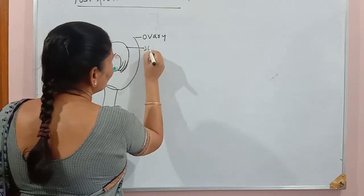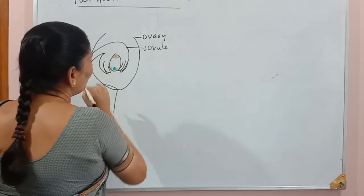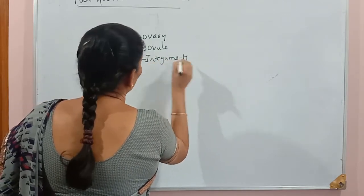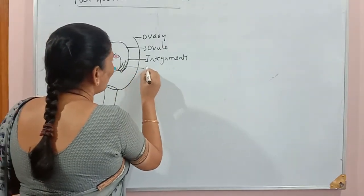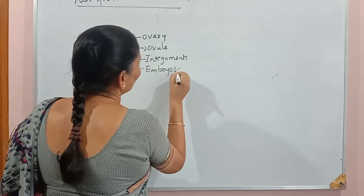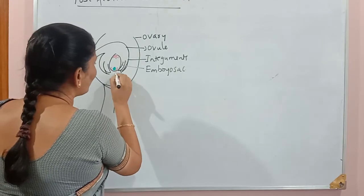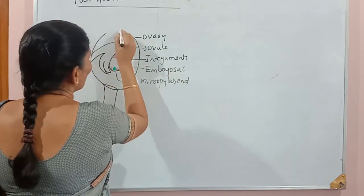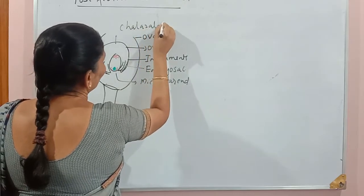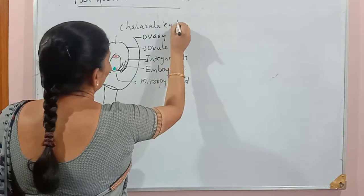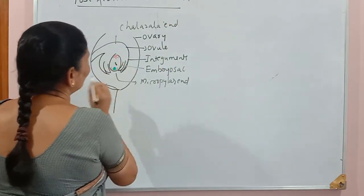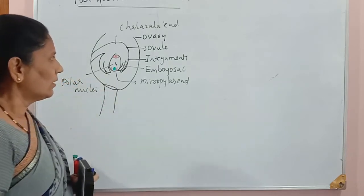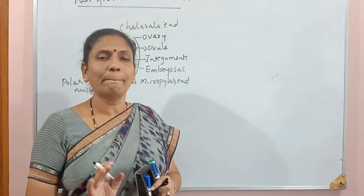Inside the ovule there are two integuments. Within this there is an oval-shaped structure called the embryo sac. This is the embryo sac — this is the micropylar end and this is the chalazal end. These two are polar nuclei. This is the structure of an ovule before fertilization.